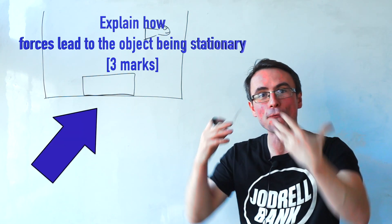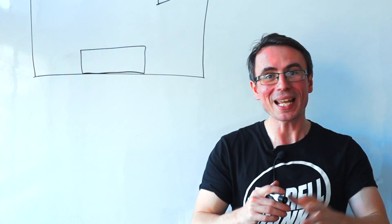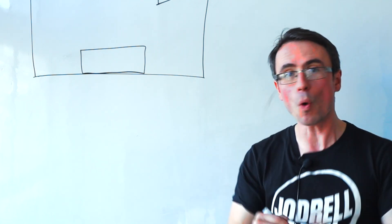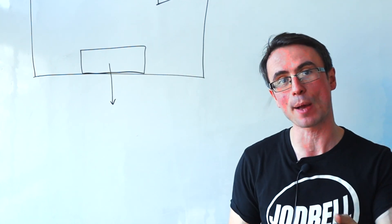Explain how forces lead to this object being stationary. To explain this, all we need to do is consider all the forces that act on it. As always, we're going to have the weight which is acting downwards.